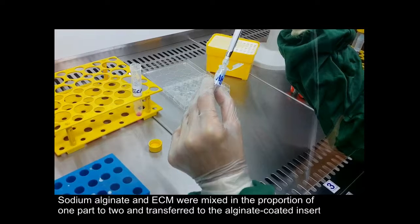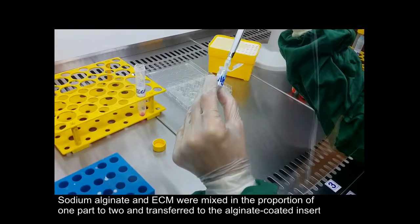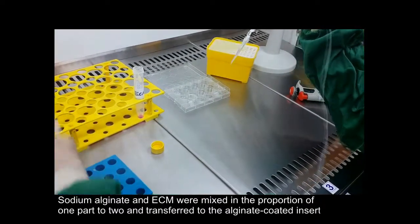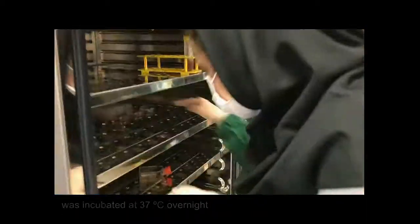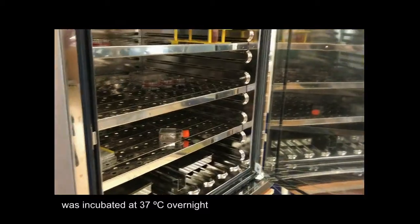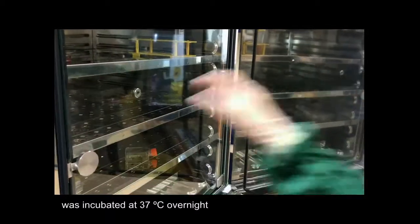To obtain adhesiveness to cells, calcium alginate must be further processed with the extracellular matrix such as matrigel prior to gel formation. Mixture of matrigel with alginate promotes survival, cell spreading, and proliferation.